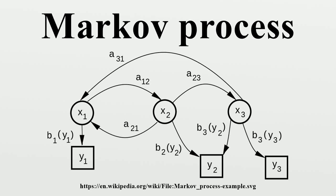In probability theory and statistics, a Markov process, named after the Russian mathematician Andrei Markov, is a stochastic process that satisfies the Markov property. A Markov process can be thought of as memoryless. Loosely speaking, a process satisfies the Markov property if one can make predictions for the future of the process based solely on its present state just as well as one could knowing the process's full history, i.e., conditional on the present state of the system, its future and past are independent.